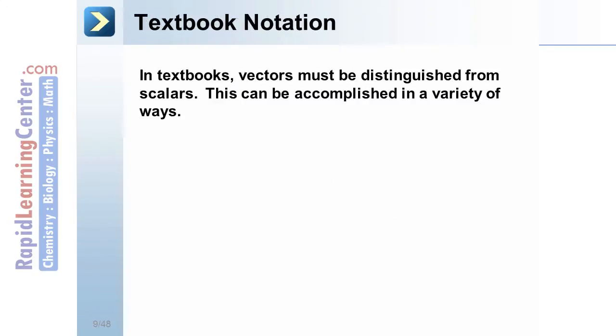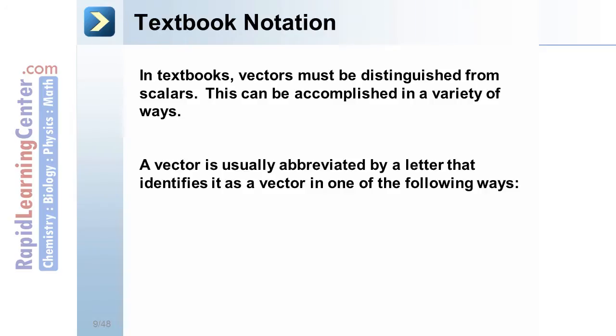Textbook notation. In textbooks, vectors must be distinguished from scalars. This can be accomplished in a variety of ways. A vector is usually abbreviated by a letter that identifies it as a vector in one of the following ways: it could be a bold letter, a letter with an arrow above it, or a letter with a line above it. The arrow above it seems to indicate a direction.